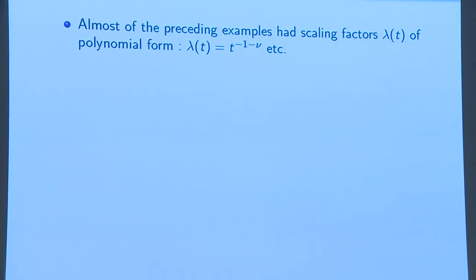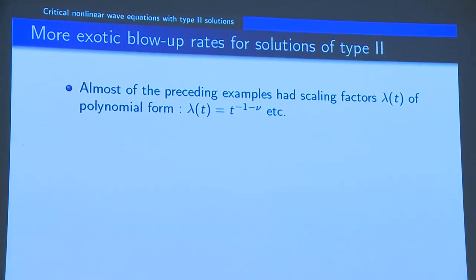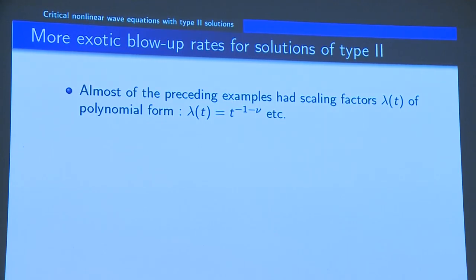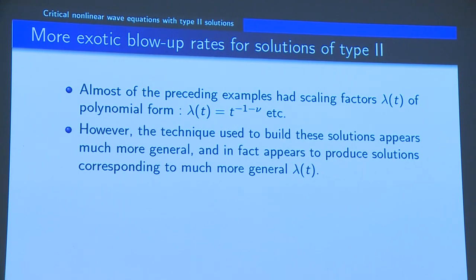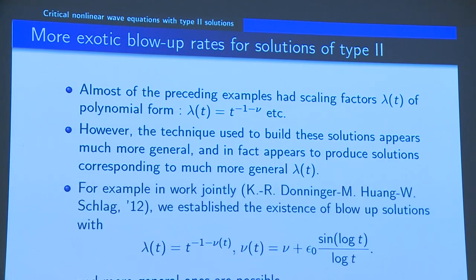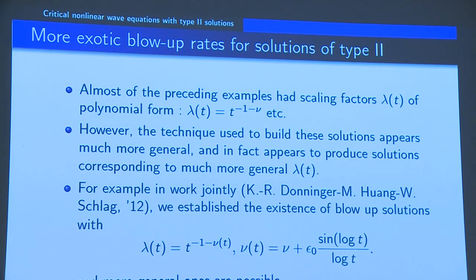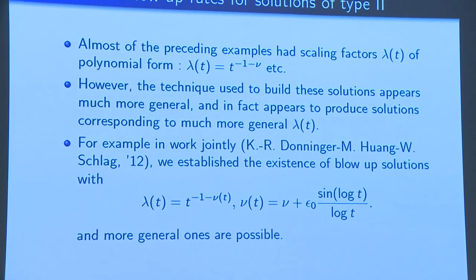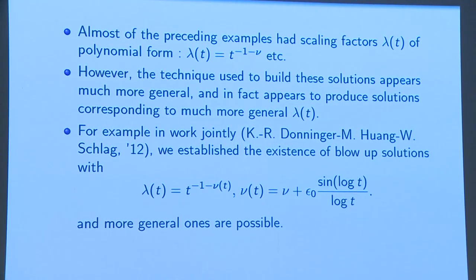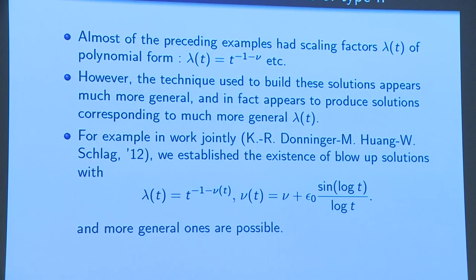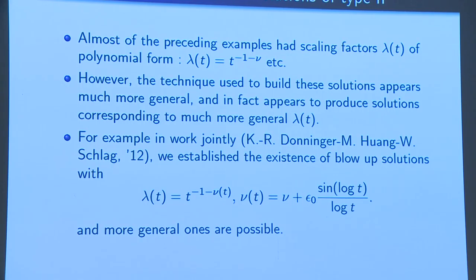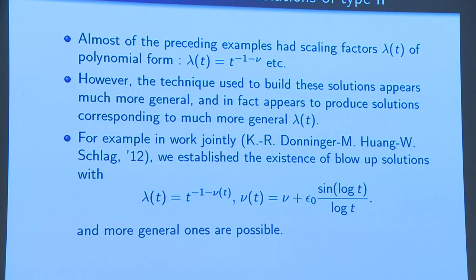Almost all of these examples have a very specific polynomial scaling law. Can one construct more general solutions with more general scaling laws? An example of this was done by Donninger, Huang, Schlag and myself, where we show that you can impose a little bit of oscillation in these ν exponents. You could do analytic functions of a certain type, though it's incredibly complicated. Interestingly, to construct such solutions, ν has to be large enough — bigger than 2. This is concordant with the expectation that the larger ν is, the more unstable these solutions become.